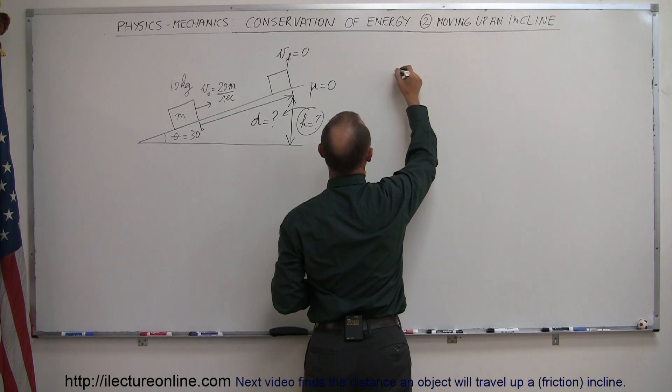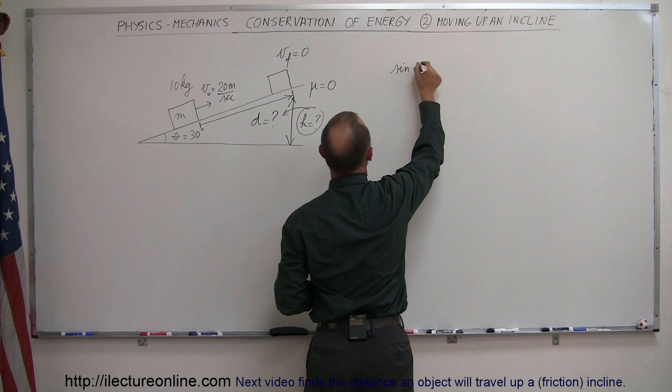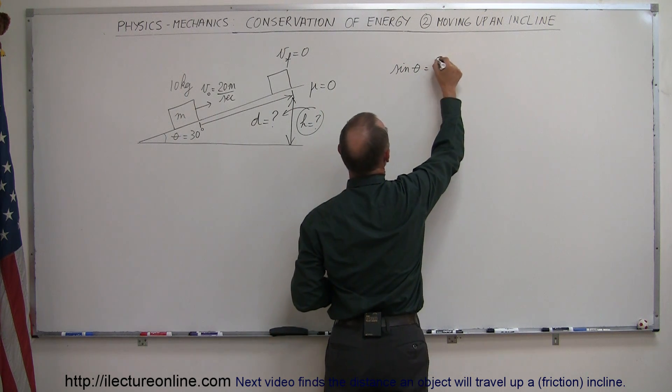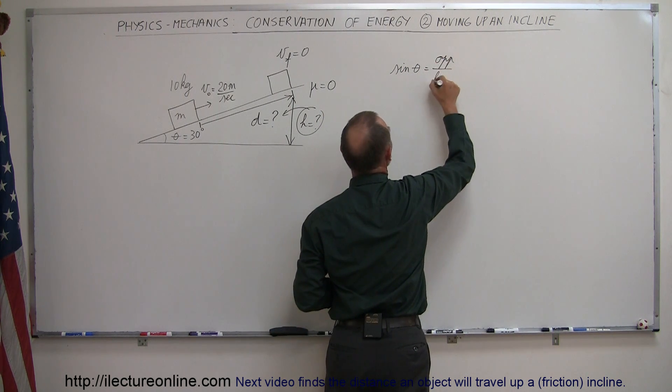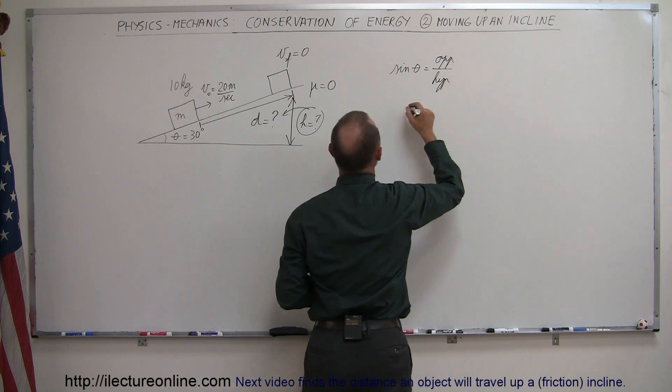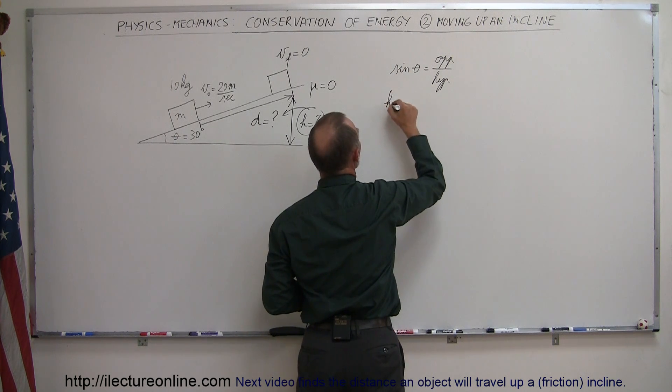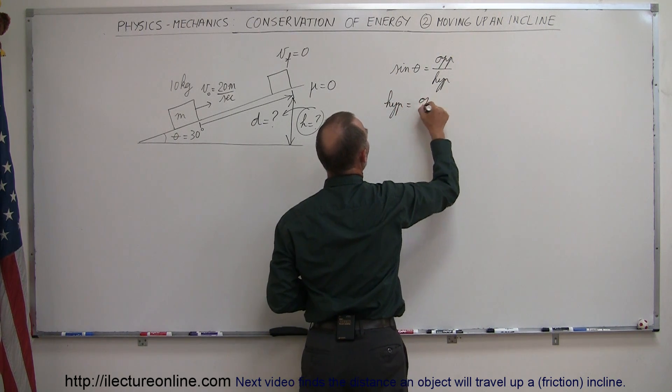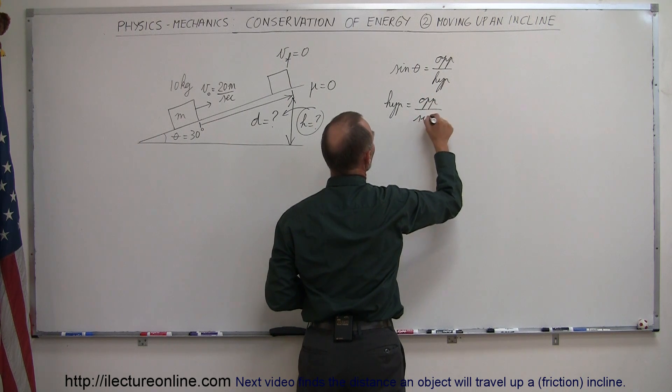We can say that the definition of the sine of theta is equal to the ratio of the opposite side divided by the hypotenuse, which means that the hypotenuse is equal to the opposite side divided by the sine of theta.